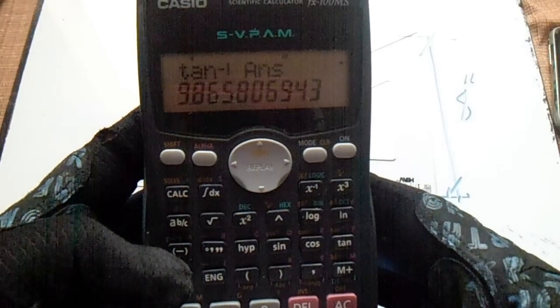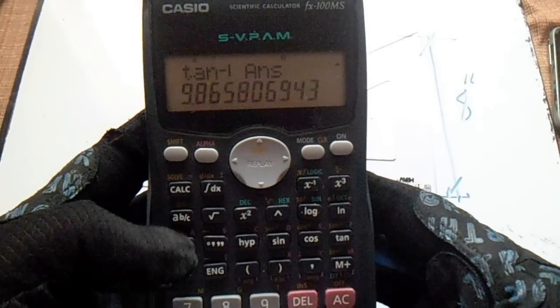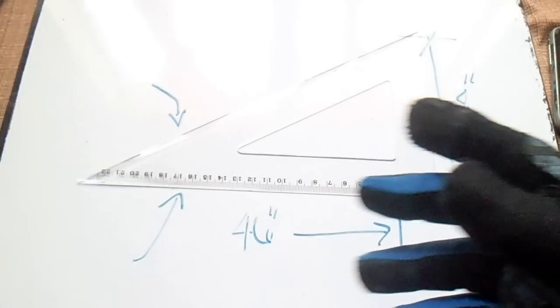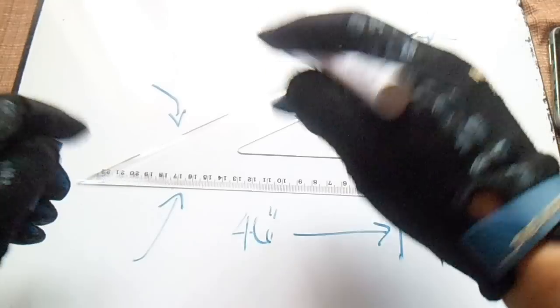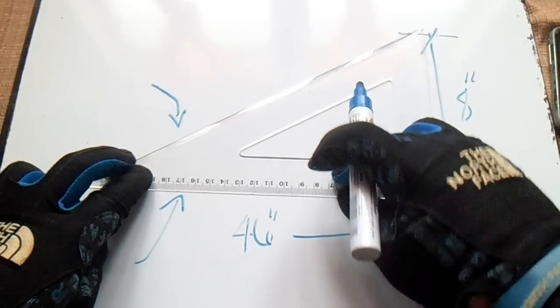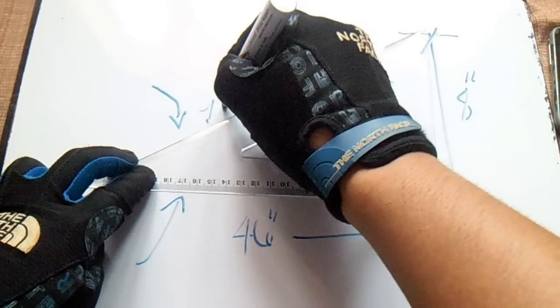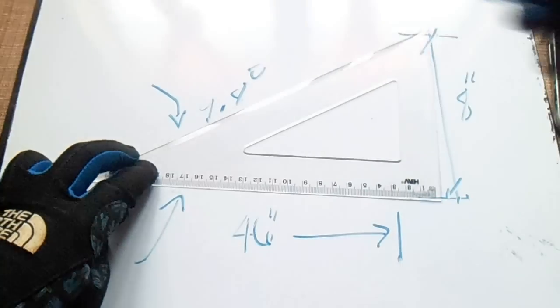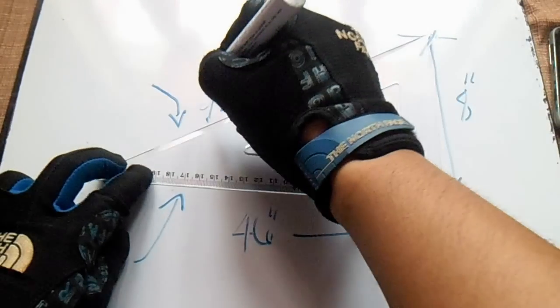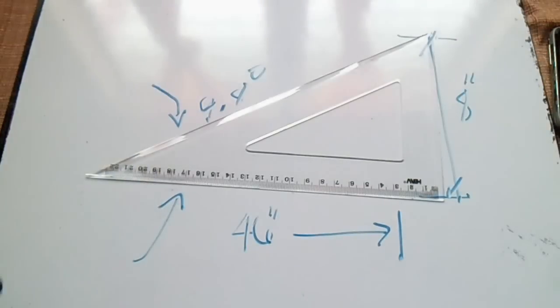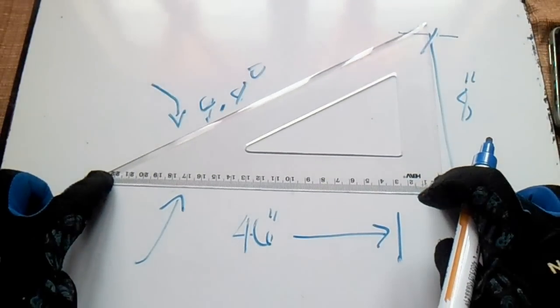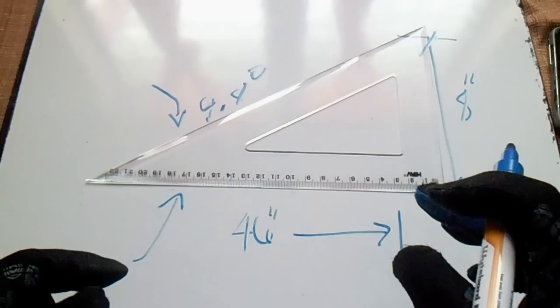Using tangent, we have 9.8 degrees. So this is our degrees for the slope - 9.8 degrees.